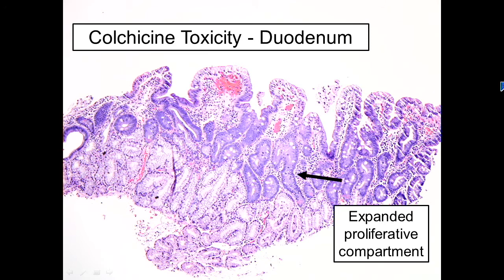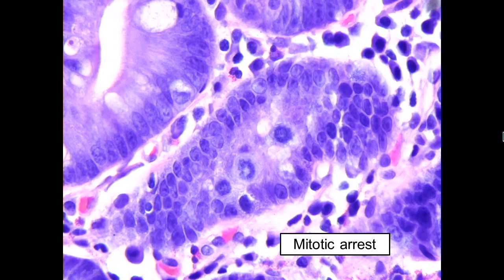Here is a beautiful duodenal biopsy. This patient had horrendous diarrhea and was taking colchicine. You'll notice that the crypts are expanded — here are the Brunner glands — so the villi by default are a little on the short side, but it's not very inflamed. At high magnification, we can see the telltale sign: in the proliferative compartment, mitotic arrest manifests as ring mitoses that are easy to find. A very cool pattern.